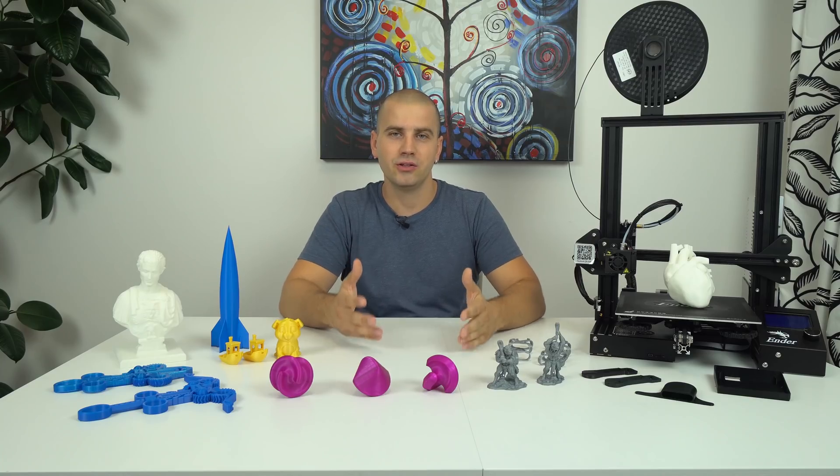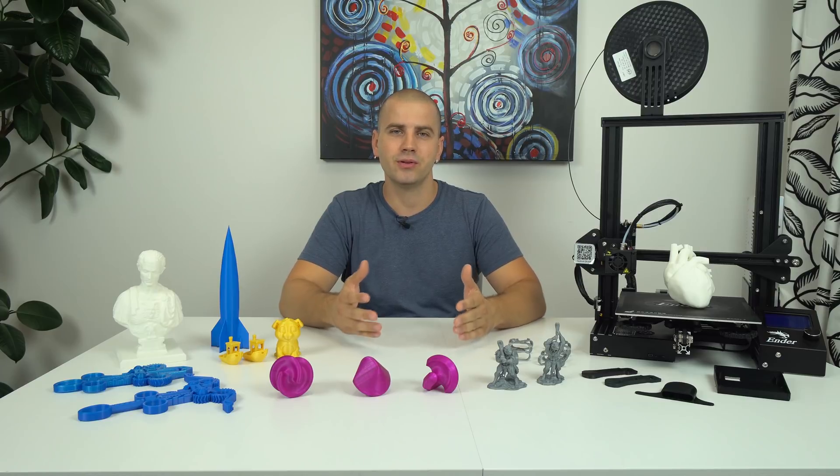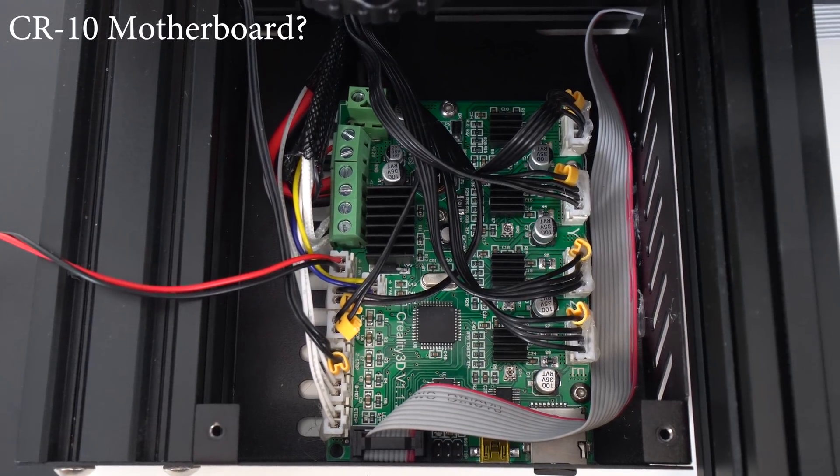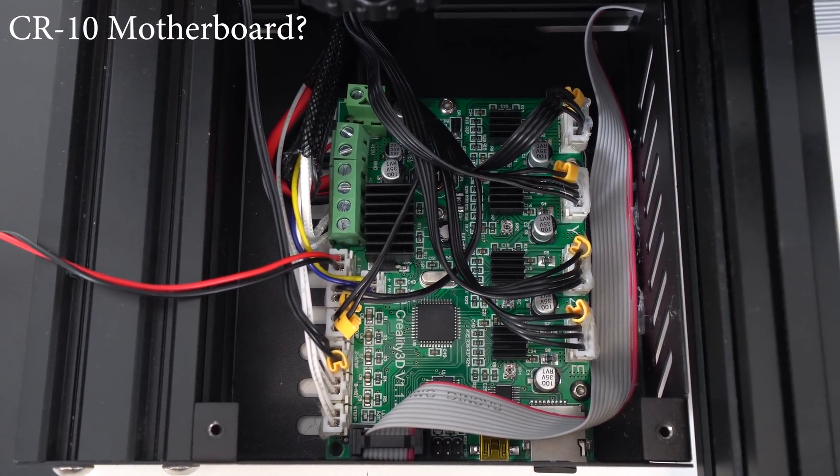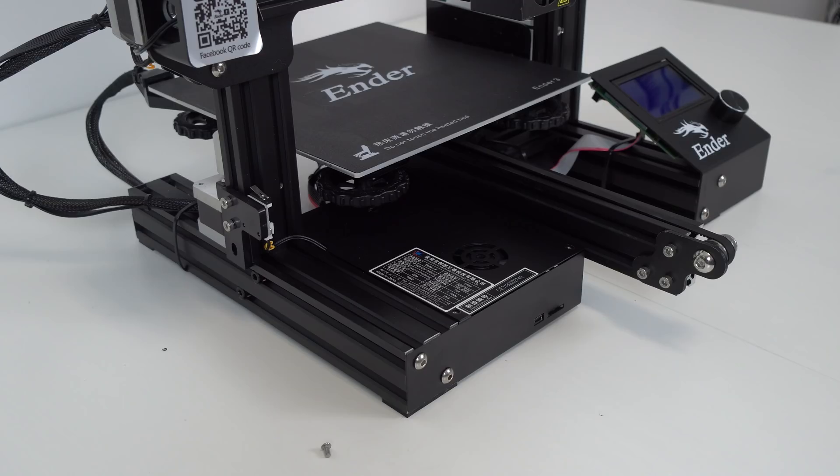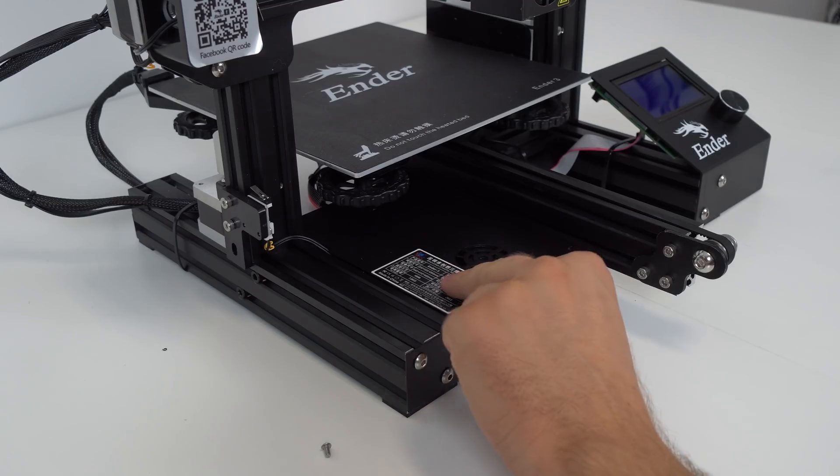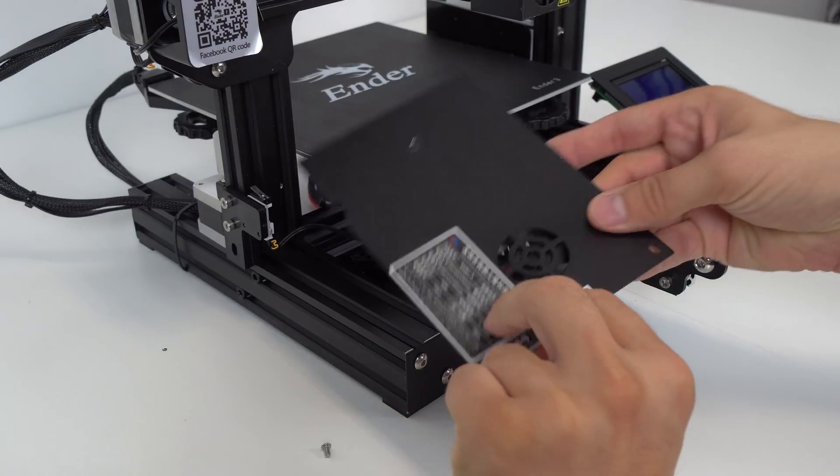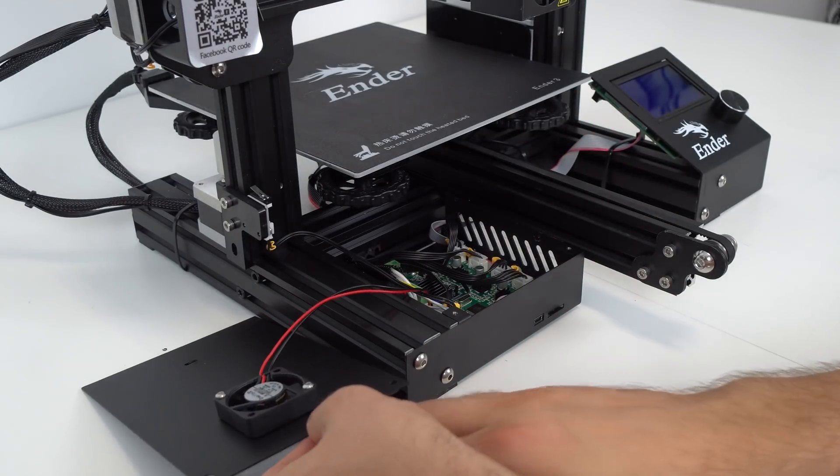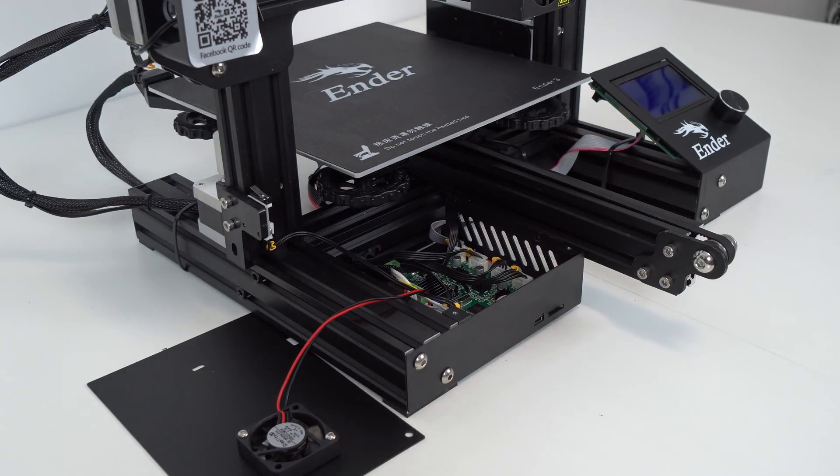I noticed also that the Ender 3 is using CR10 motherboard if I'm not mistaken and I didn't know that this board can work on 24V, well I know now. Also, I like how all electronics is packed inside this small enclosure and it's part of the frame now, so we don't need that bulky noise control box no more.